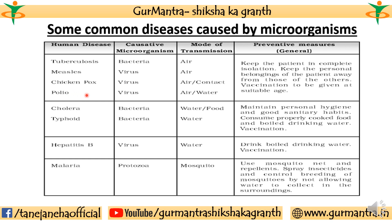Cholera is a bacterial disease and its mode of transmission is through contaminated food and water. Typhoid is also a bacterial disease — if you are using dirty or contaminated water, you can get typhoid. Preventive measures include maintaining personal hygiene, good sanitary habits, access to properly cooked food and boiled water. If someone gets these diseases, proper vaccination and medication should be supplied.